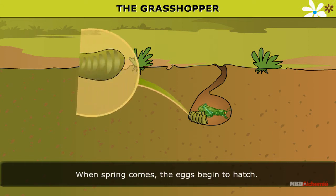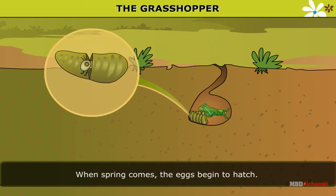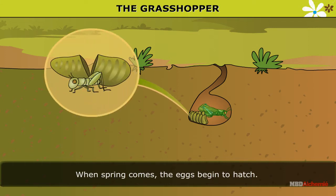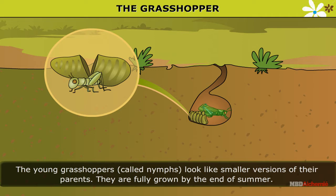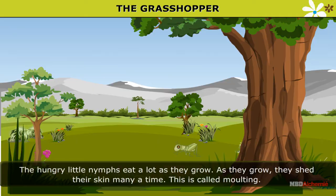When spring comes, the eggs begin to hatch. The young grasshoppers called nymphs look like smaller versions of their parents. They are full grown by the end of summer.